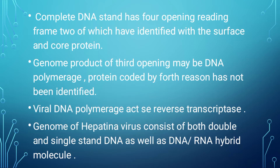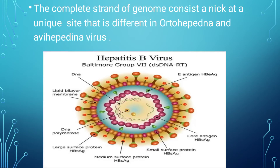The genome product of the third open reading frame may be DNA polymerase; the protein coded by the fourth region has not been identified. Viral DNA polymerase acts as a reverse transcriptase. The genome of Hepatitis B consists of both double and single-stranded DNA as well as DNA-RNA hybrid molecules. The complete strand of the genome consists of a nick at a unique site that differs between Orthohepadna and Avihepadna viruses.